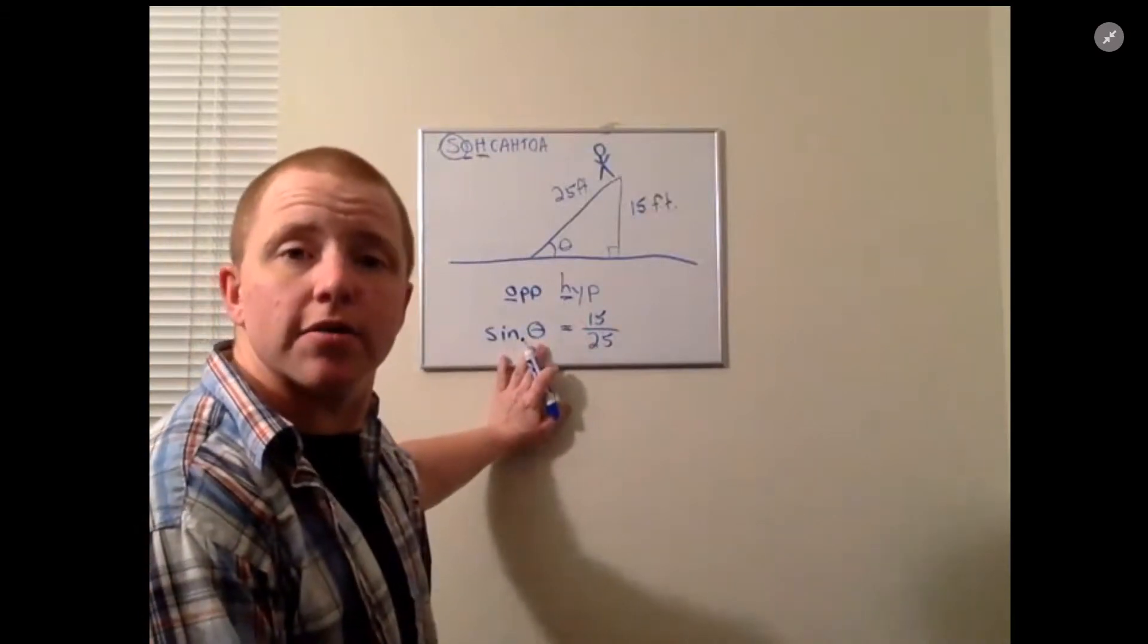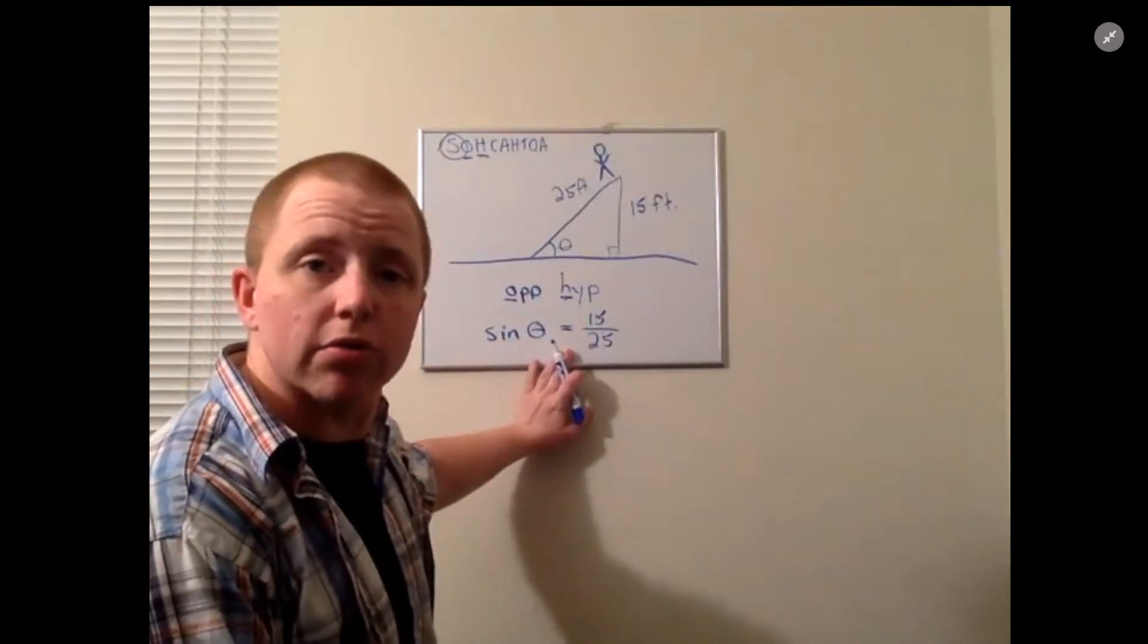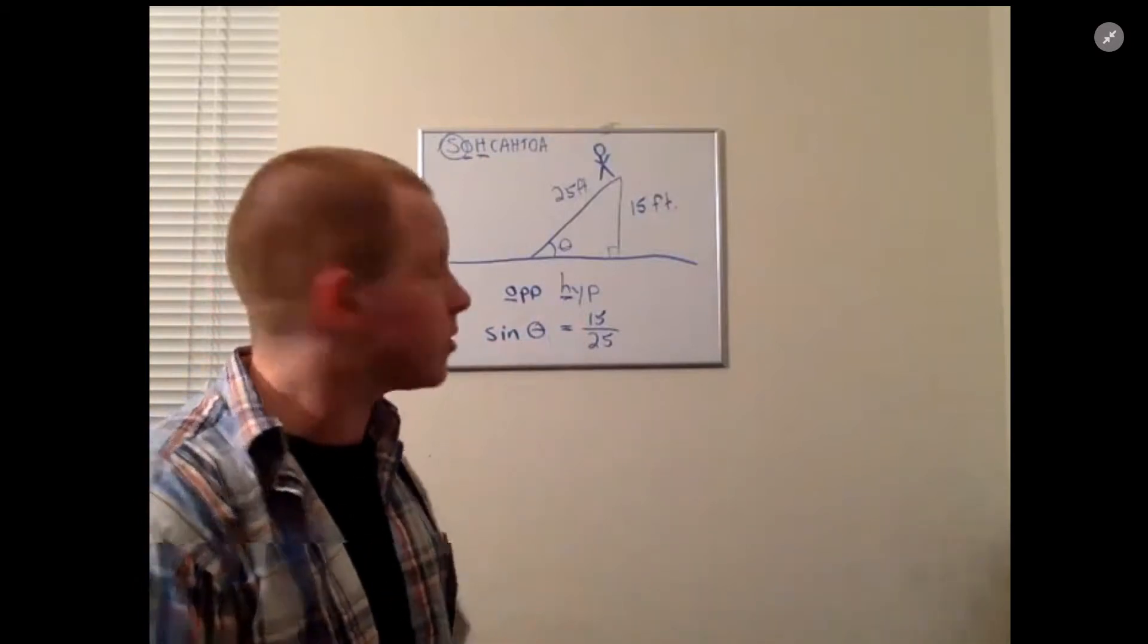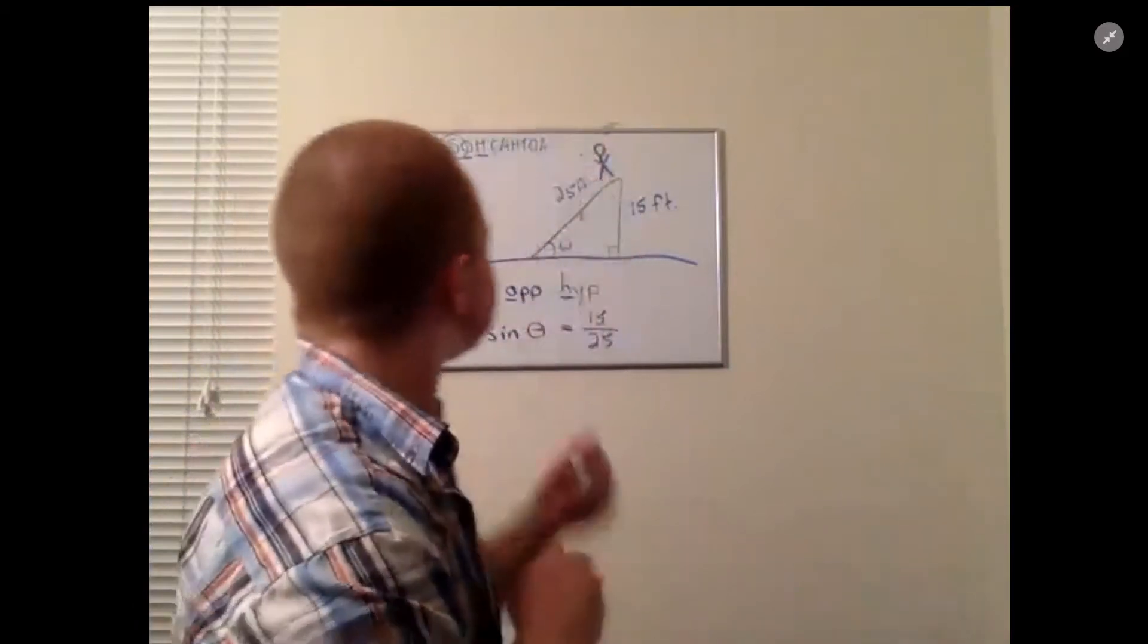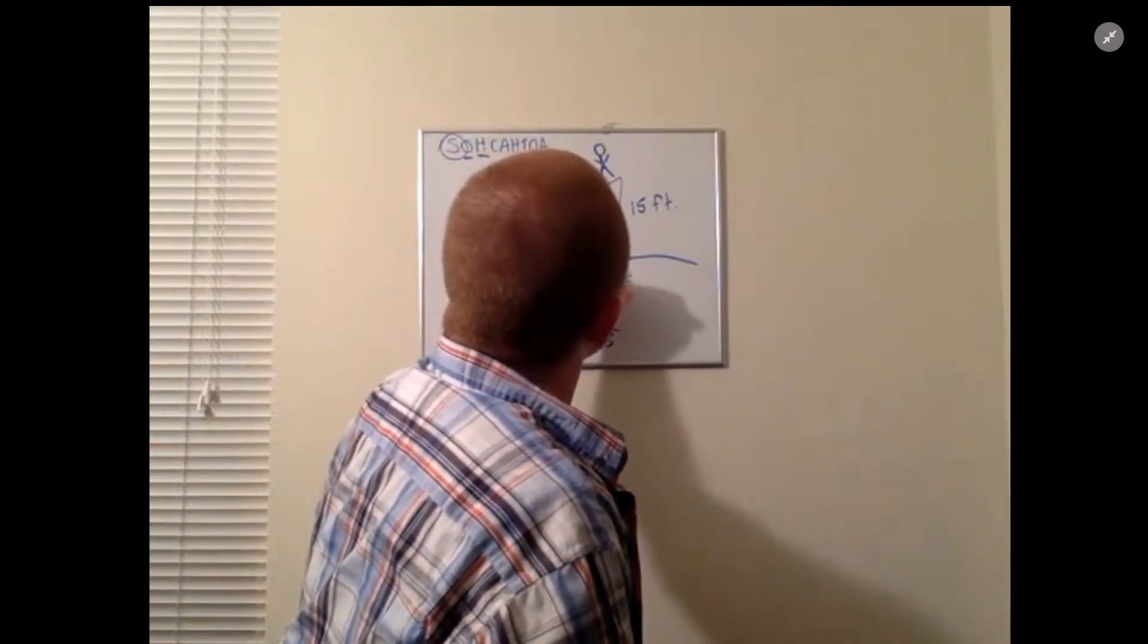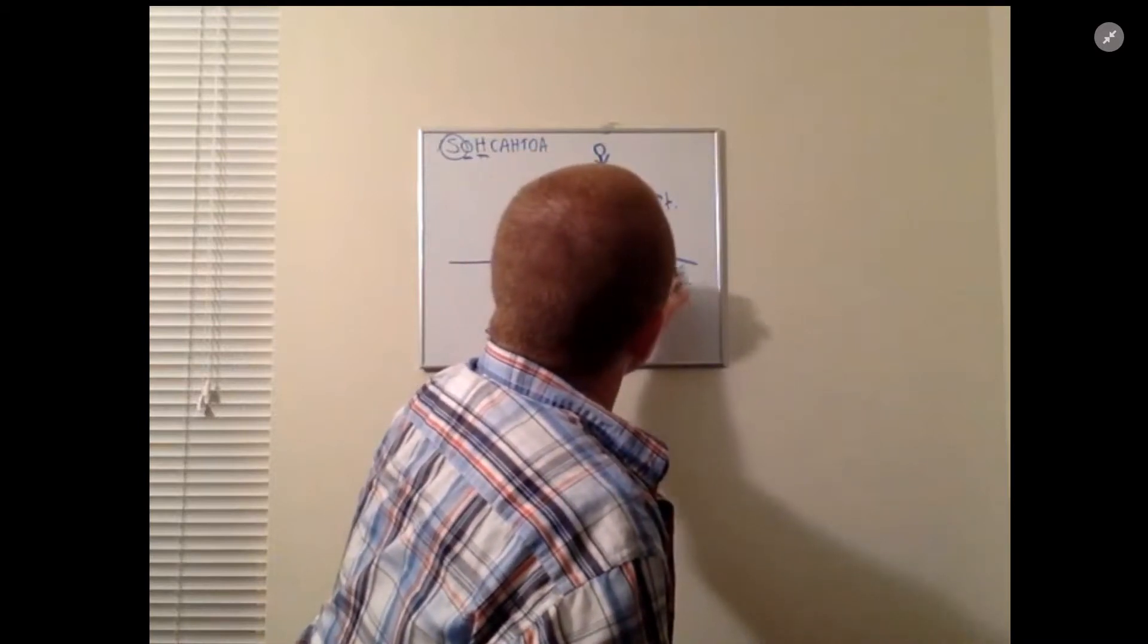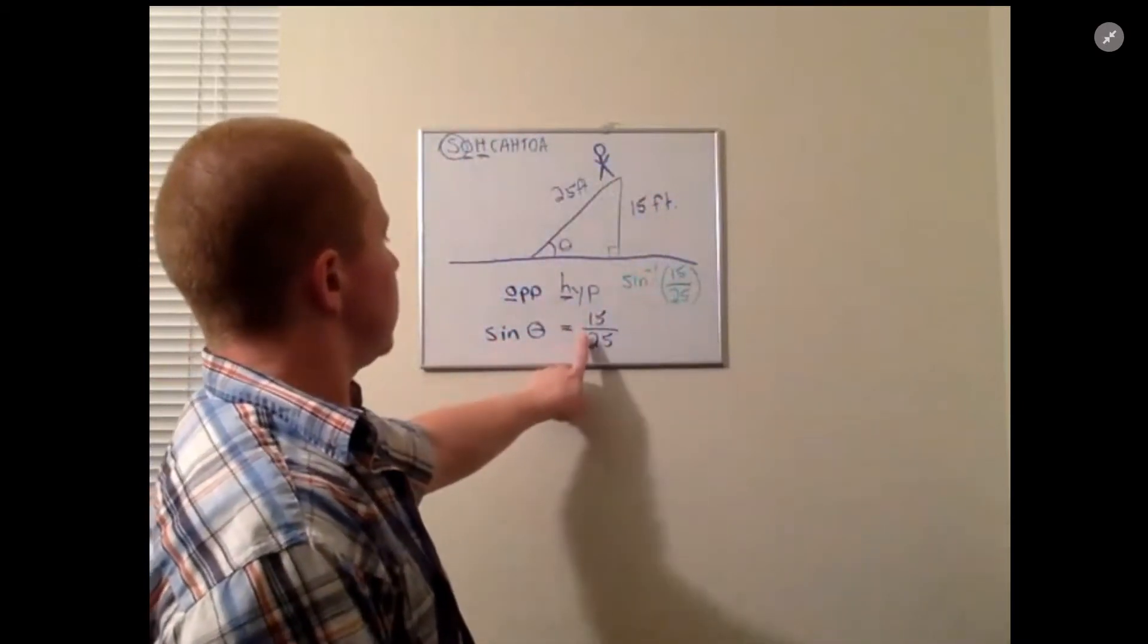So the sine of theta equals 15 over 25. We need to get theta by itself because this gives sine of theta but we need theta as an actual angle. So in order to get theta by itself, we have to take the inverse sine or the arcsine, either one that's the same thing. So we would have the inverse sine of 15 over 25.